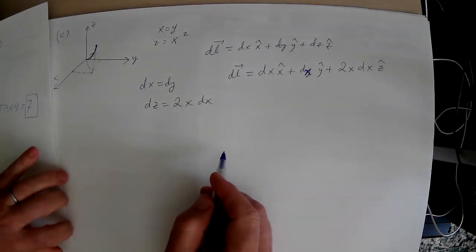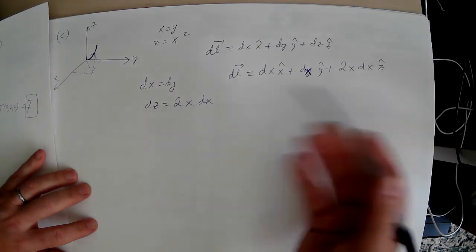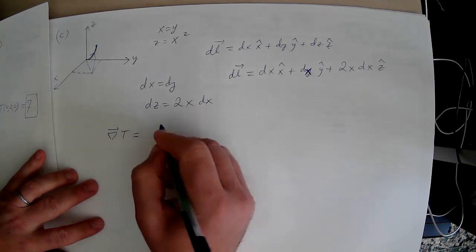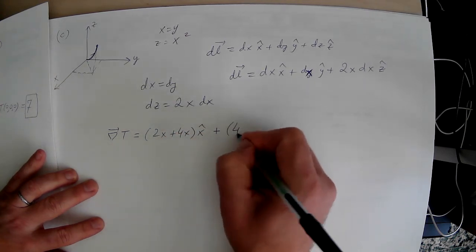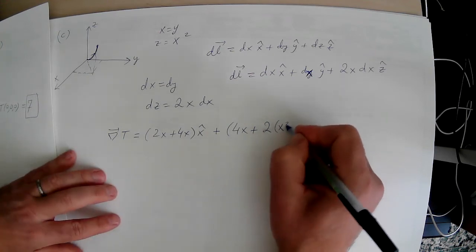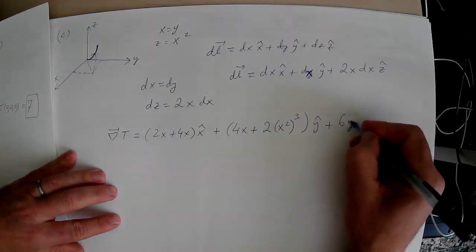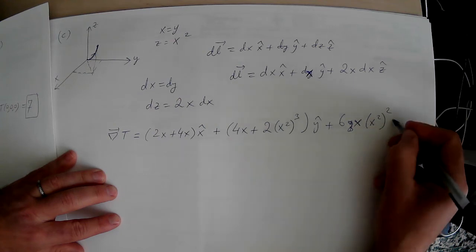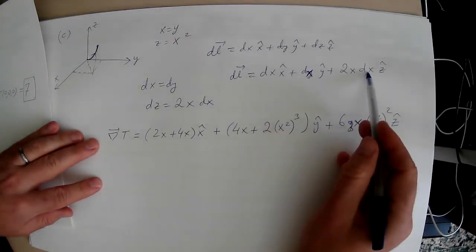Now, I can take the dot product of gradient of T, which is this, with my dl here. Now, I have a bunch of terms here. Well, from the original point to the final point, x varies 0 to 1. So it will be just an x integral. So in terms of y, I'm going to replace x everywhere. So I have (2x + 4x)x-hat. And then 4x plus, in terms of z, I'm going to put x². So I have 2x⁶ y-hat plus 6y. And again, instead of y, I'm going to put x, they're equal. Instead of z, I'm going to put x² and another squared z-hat. Now, that's my gradient of T. And then I will dot with dl.